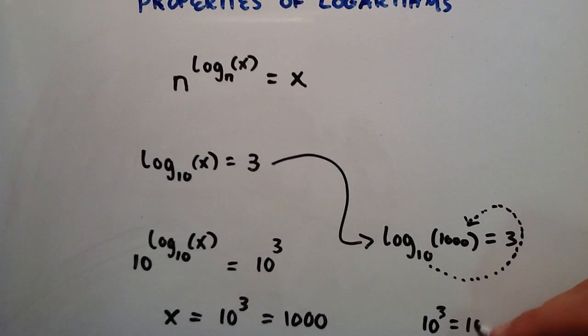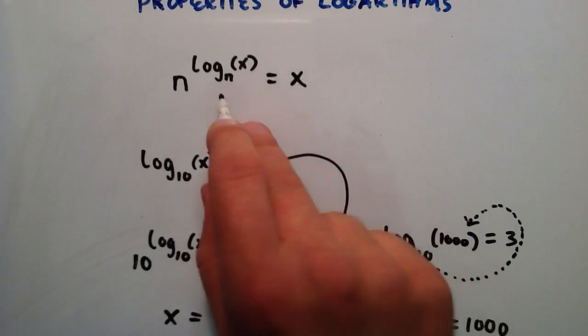And that's true. So therefore we solved x equals 1,000 by using this property of logarithms.